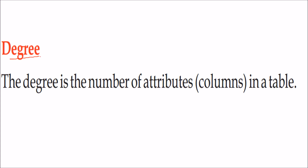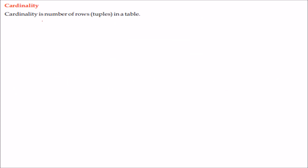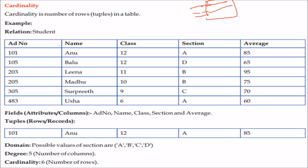First, let us understand degree and cardinality. The degree is the number of attributes or columns in a table. Cardinality is the number of rows in a table. For example, if a table has two attributes, the degree is two; if it has three, the degree is three. Cardinality counts how many rows are present.